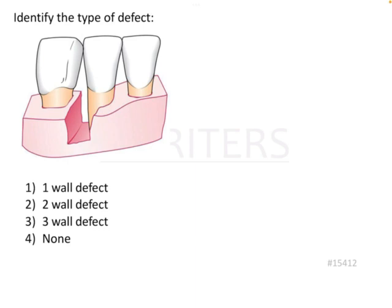Identify the type of defect. Here we have an image where there is some amount of wound loss, as we can see. The options are: 1-wall defect, 2-wall defect, 3-wall defect, or none.